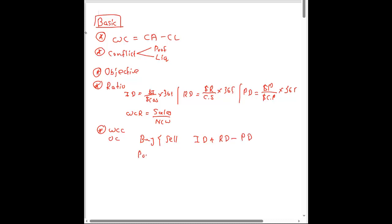For a production and sell business, the working capital cycle equals raw material days plus work-in-progress days plus finished goods days plus receivable days minus payable days.